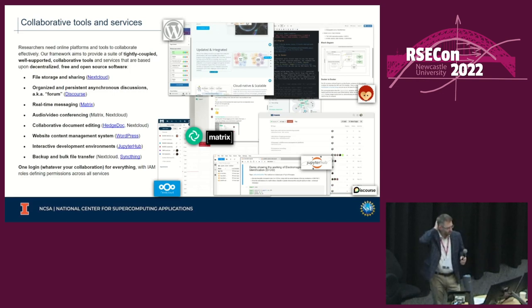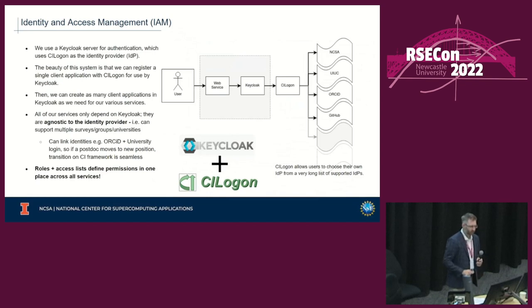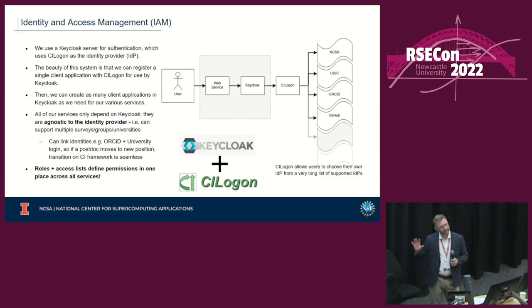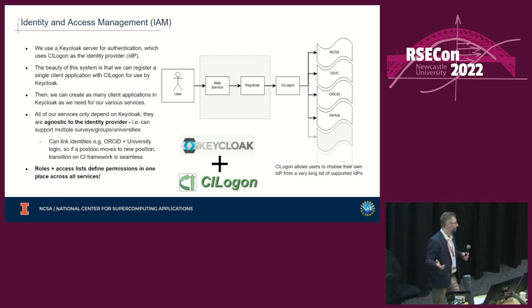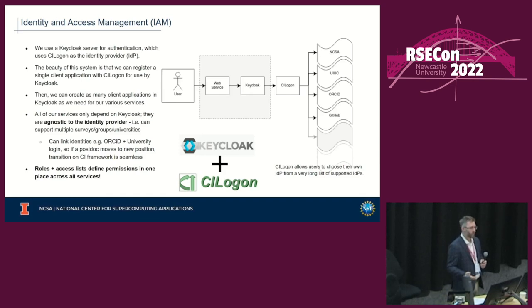While all these services are independent third-party solutions, collaborators authenticate to all of them using our unified authentication system — single sign-on. This identity and access management component is a critical puzzle piece. Gone are the days when you would generate individual usernames and passwords, which is not only a major security risk but a pain for everybody. There's no reason you can't use an existing trusted identity provider to prove that you are who you claim to be.